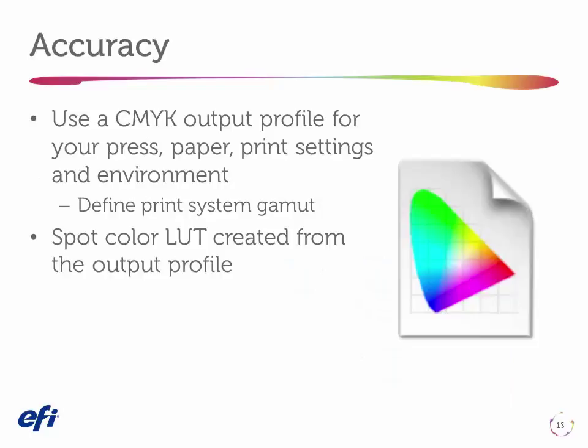When we talk about accuracy, the key thing is to use a CMYK output profile designed for your digital system. The manufacturer-supplied profile is a very good quality profile — in some cases actually approved by the manufacturer, and all profiles we ship with Fiery have to be approved by the press manufacturer. But those profiles are made for a different engine than the one in your shop, in a different environment, maybe on a different paper. So if you really want to precisely define the gamut of your print system so that color management can work 100%, we really need to make a custom output profile.